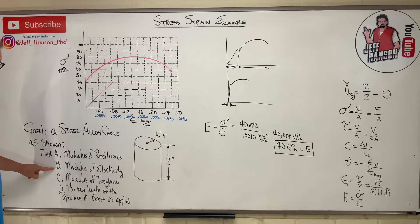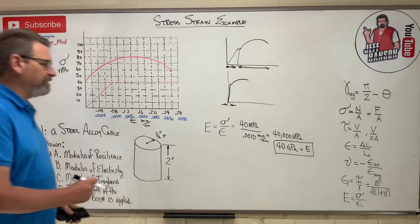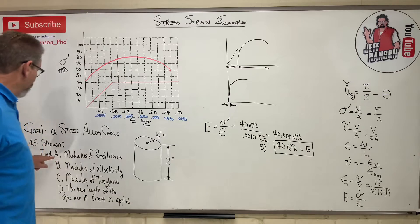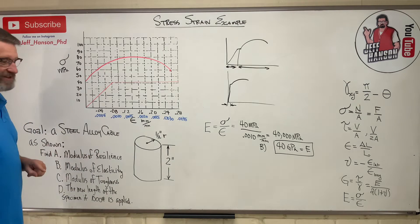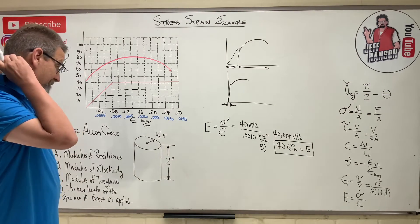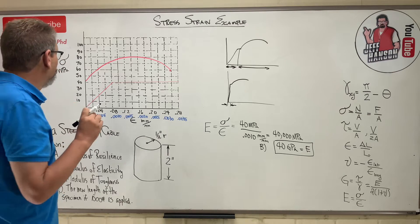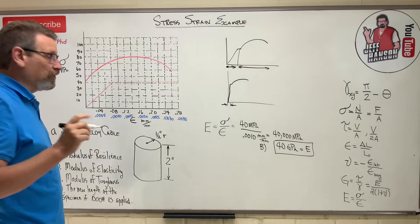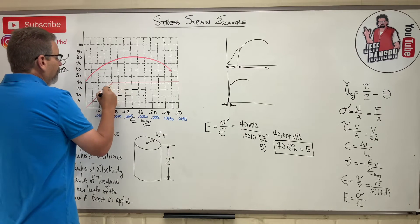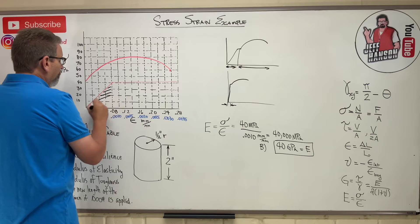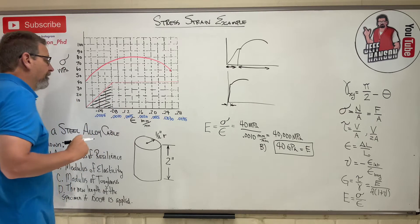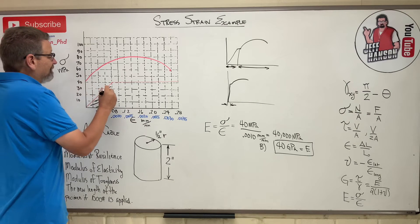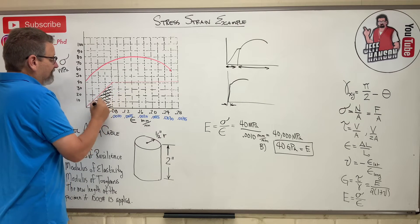I did part B first — can you forgive me? Part A asks for the modulus of resilience. The modulus of resilience is the area under the elastic region of the curve — so it would be this triangular area here.